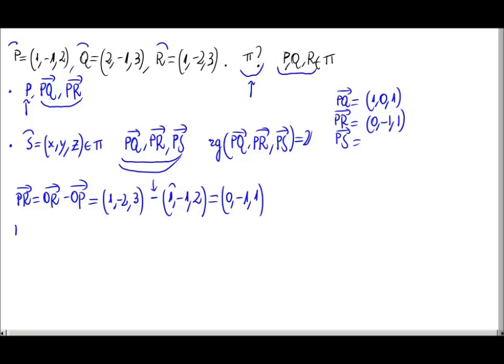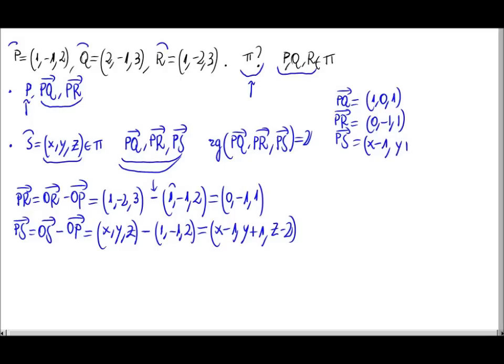Finally, let's go with the PS. PS is OS minus OP. OS is (x, y, z) minus OP (1, -1, 2). So PS would be (x minus 1, y plus 1, z minus 2). Let's write it up here. PS is (x minus 1, y plus 1, z minus 2).